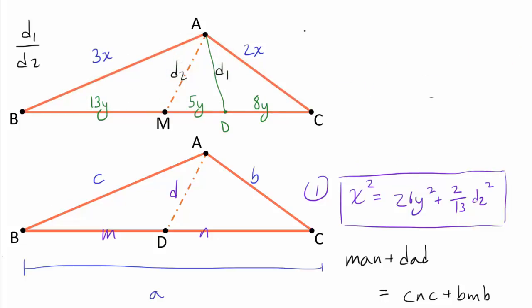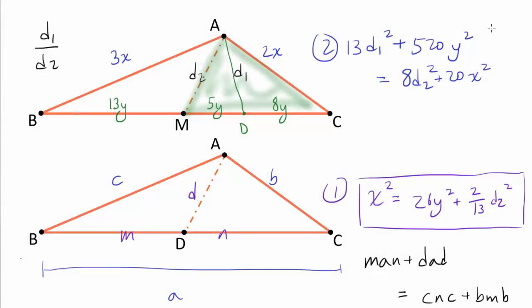So, how are we going to apply Stewart's theorem the second time? Well, we are going to look at triangle AMC instead. This is going to give us some information about D1 without making it too symmetric to the first expression that we can't do anything with the equations. This is what we get when we apply Stewart's theorem. I'm not gonna go through the arithmetic.